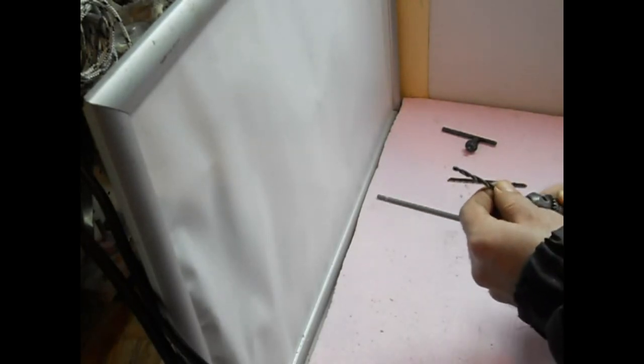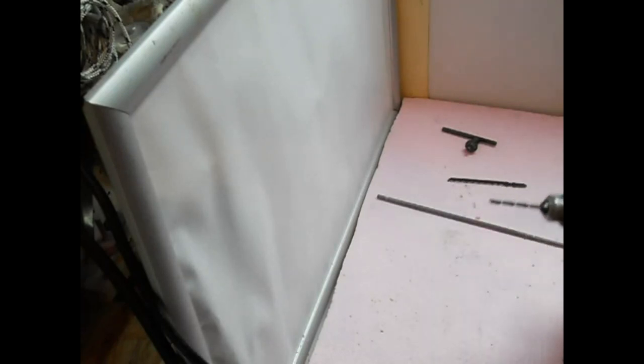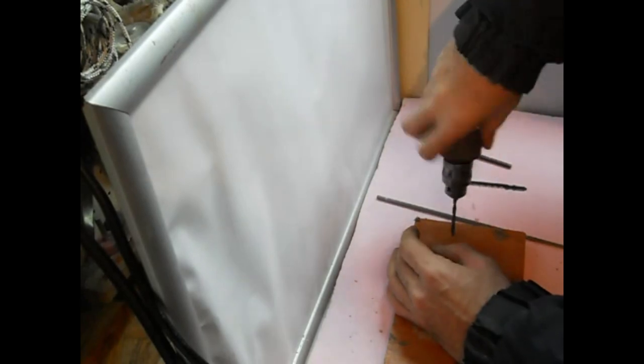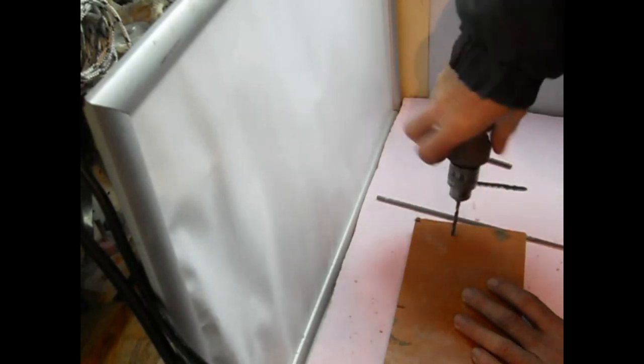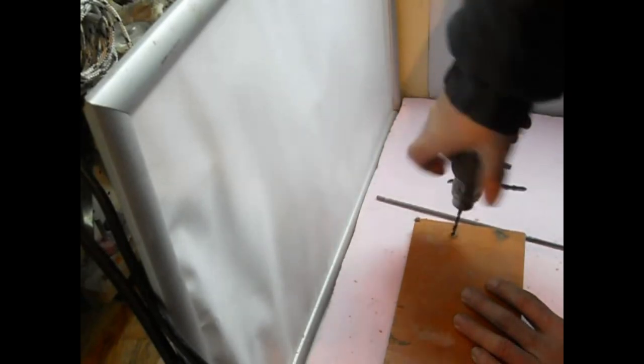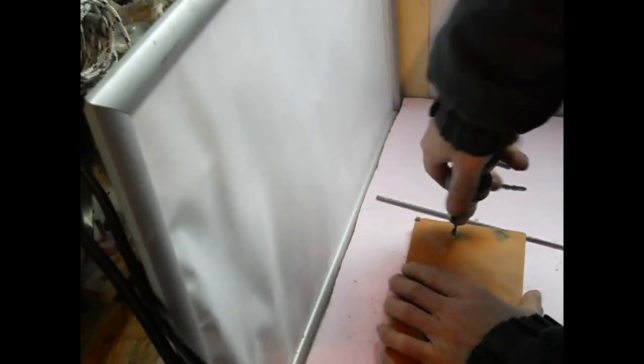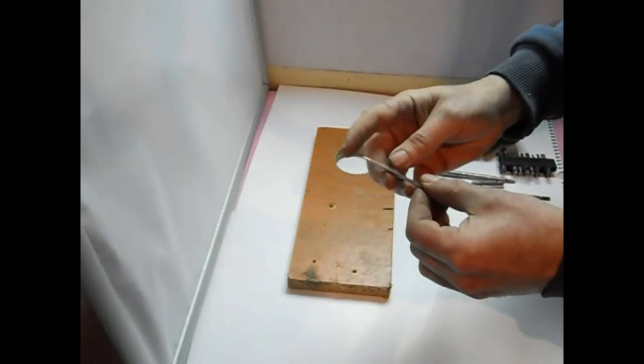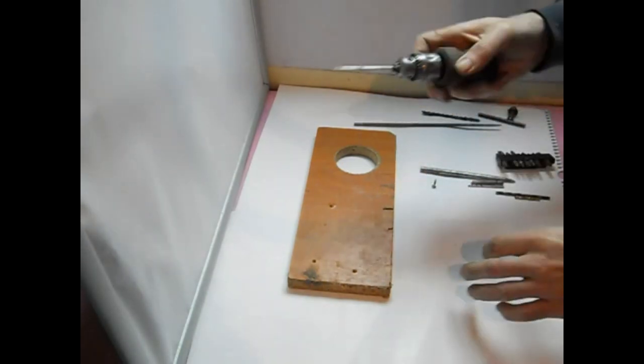Then we drill the hole manually. It takes a little more effort but we see that our tool can drill a hole in the chipboard. Now there comes the part that will make this tool useful. This is my favorite part.